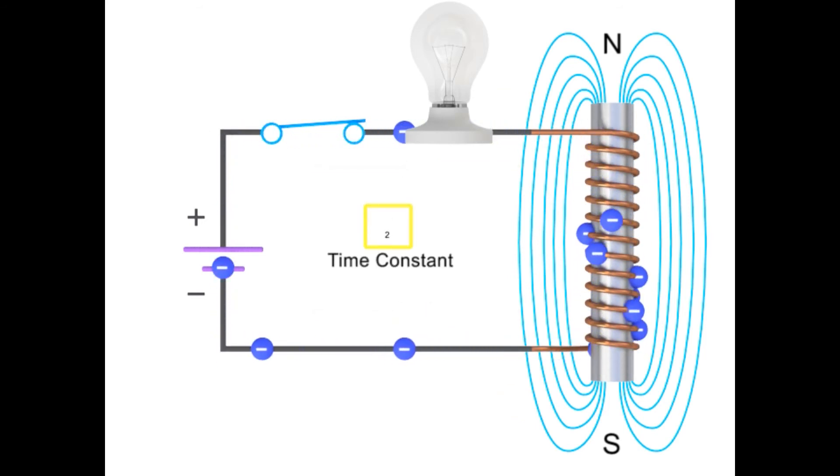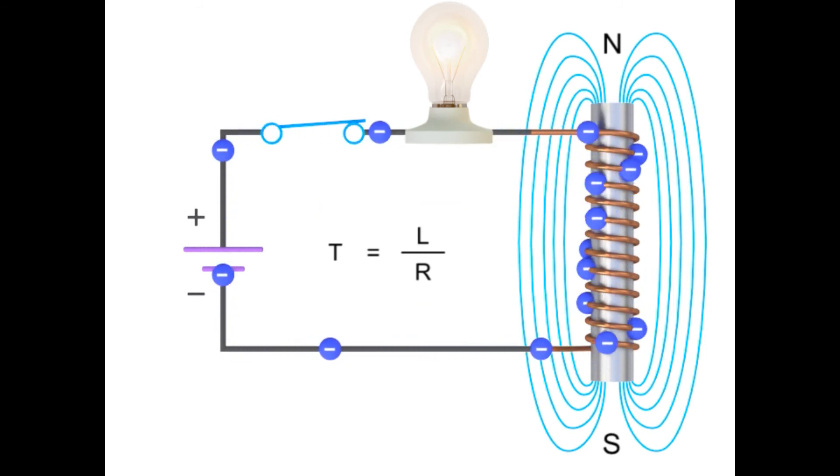The current will continue to flow and reach its maximum value after 5 time constants, or 5T, where T is equal to L divided by R. The light bulb will then be at its maximum brightness.